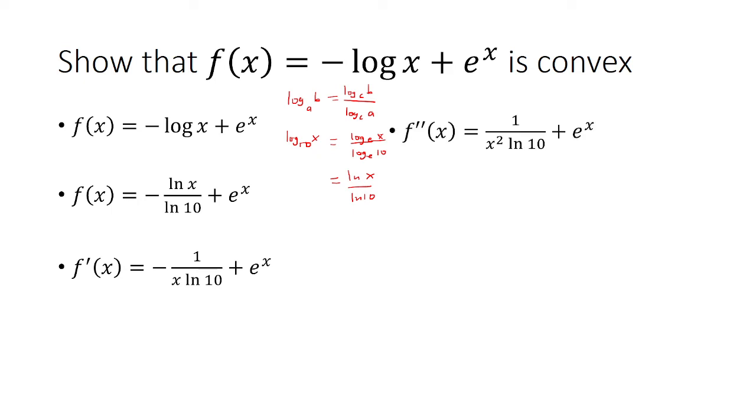Now we take another derivative. The derivative of negative 1 over x is 1 over x squared, and then we're going to multiply that by natural log of 10 because that is the coefficient. And then the derivative of e to the x is e to the x.